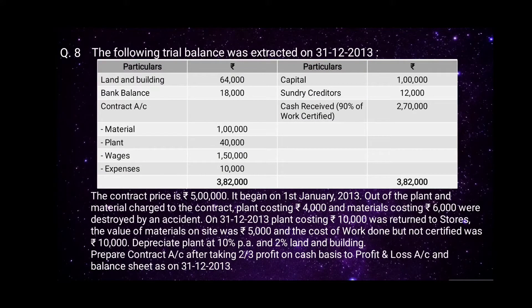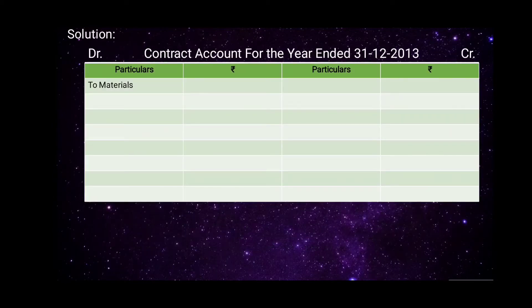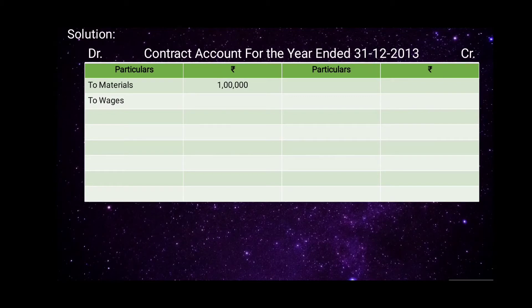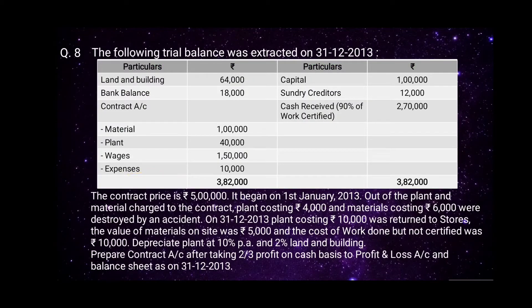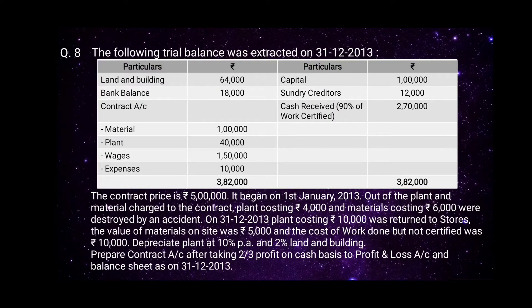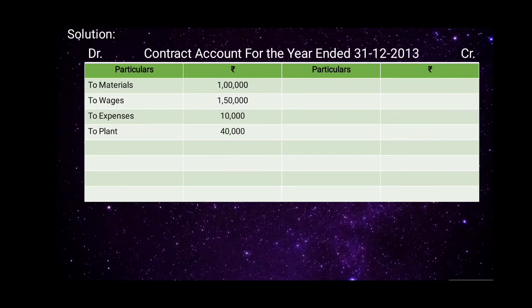The first expense of the contract account is materials, which is 1 lakh — recorded on the debit side. Next, wages amount is 1,50,000, recorded on the debit side. Expenses amount is rupees 10,000, also on the debit side. Plant is recorded as rupees 40,000 on the debit side.